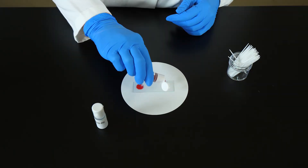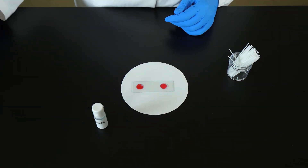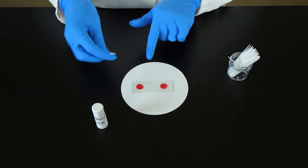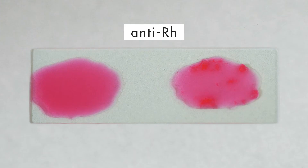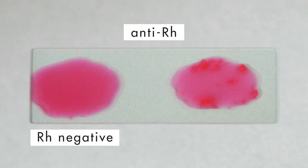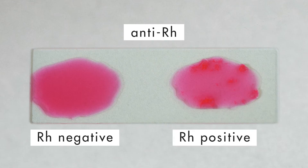To determine if blood is Rh negative or positive, a sample of the blood is added to a serum containing anti-RH antibodies. The red blood cells of Rh negative blood will not react to a serum containing anti-RH antibodies. The red blood cells of Rh positive blood will stick together in a serum containing anti-RH antibodies.